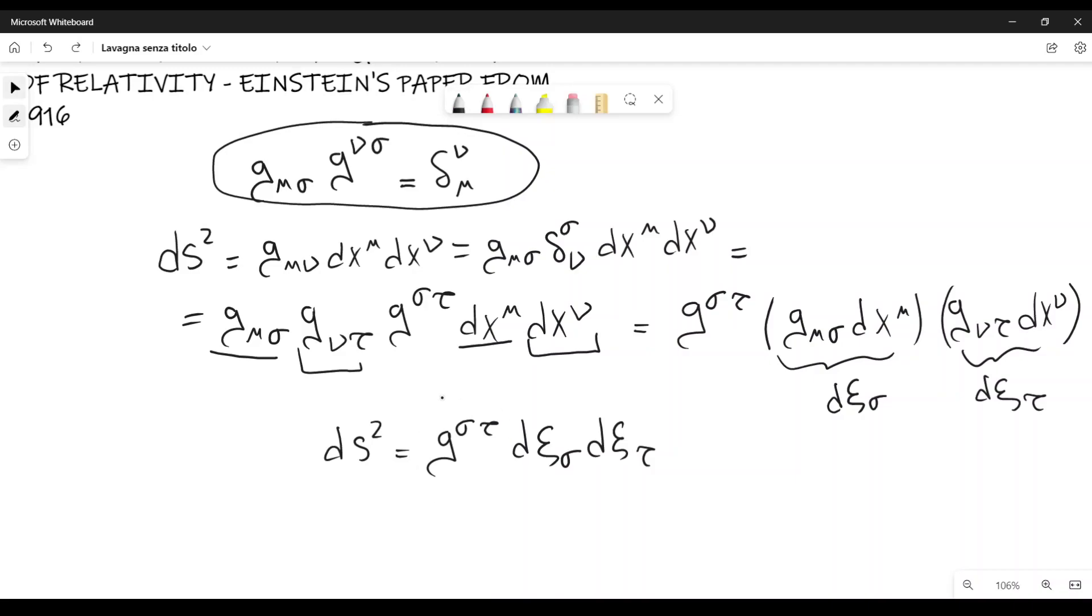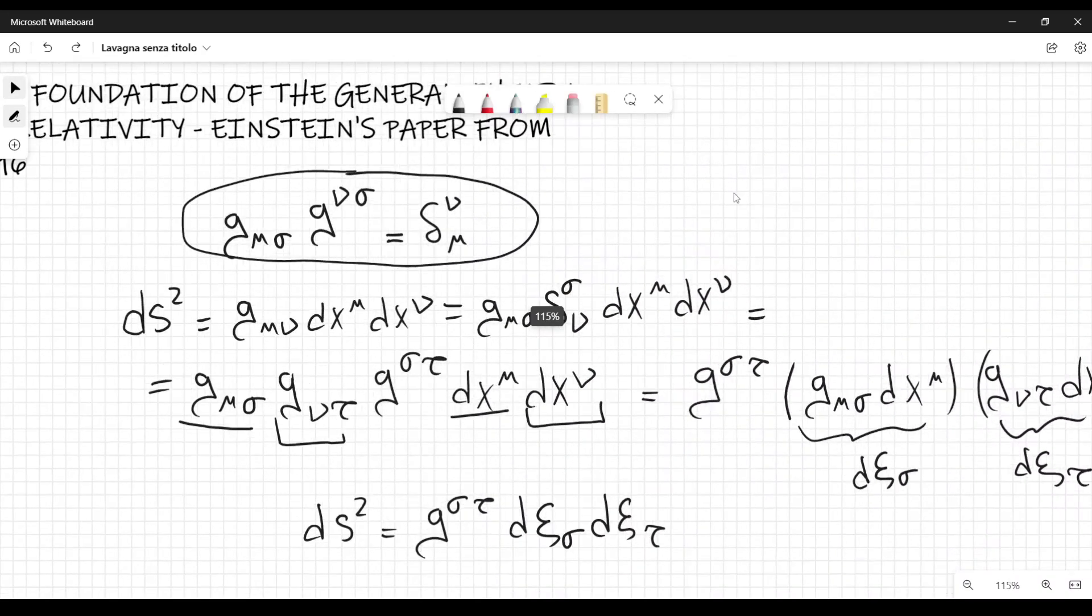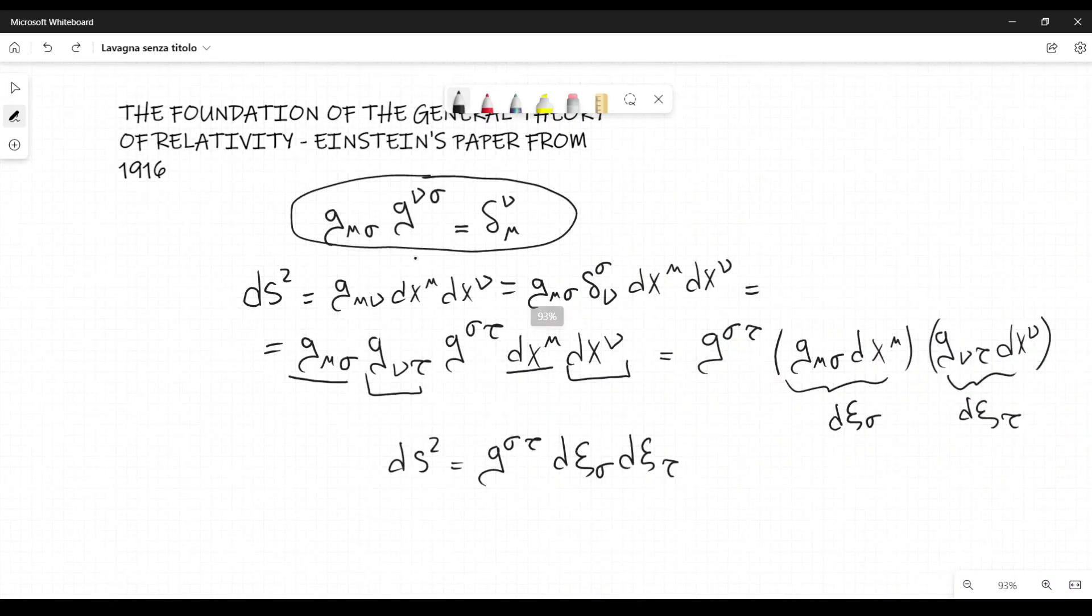d sigma tau will be a contravariant tensor. It's a contravariant fundamental tensor, and it also represents the inverse of the tensor g mu nu here. And this is the way Einstein shows that it must be a tensor.